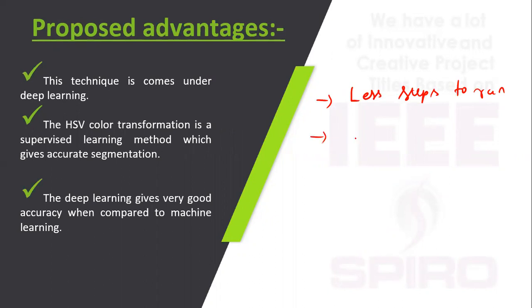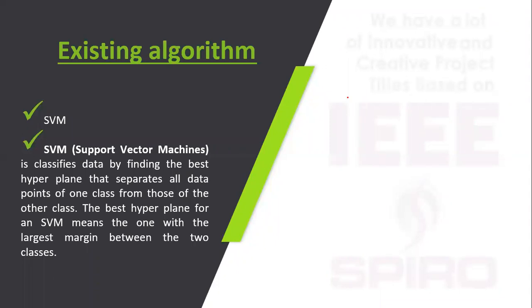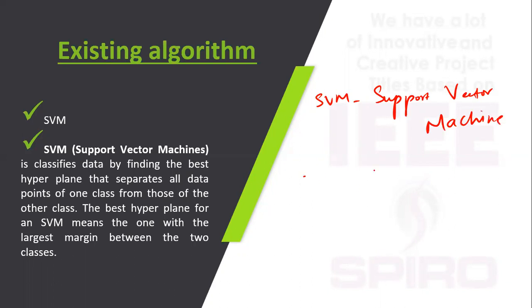In the existing system they are using SVM — Support Vector Machine. It is a classification algorithm in order to make decisions based on the training values.